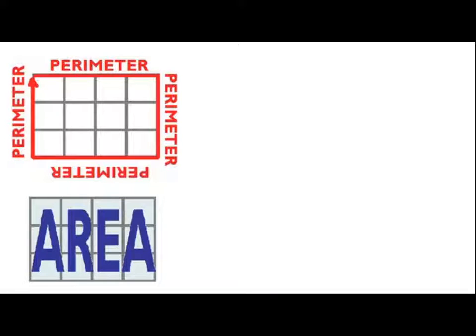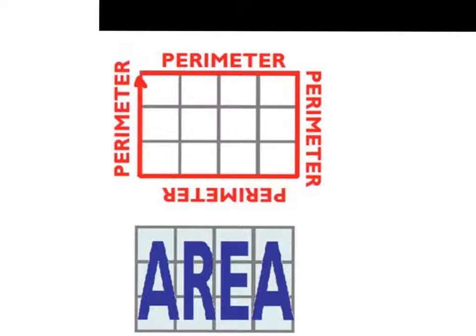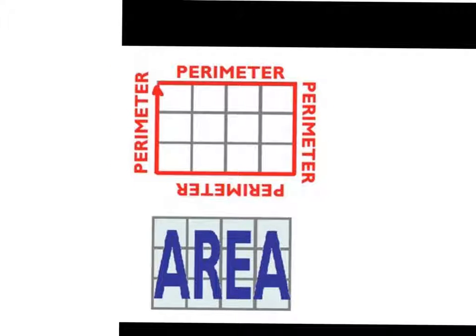And here we have another visual that we could use. Perimeter, we're seeing, is around, around, around. And area is taking up all the space of the boxes. So think perimeter, fence, area, grass.